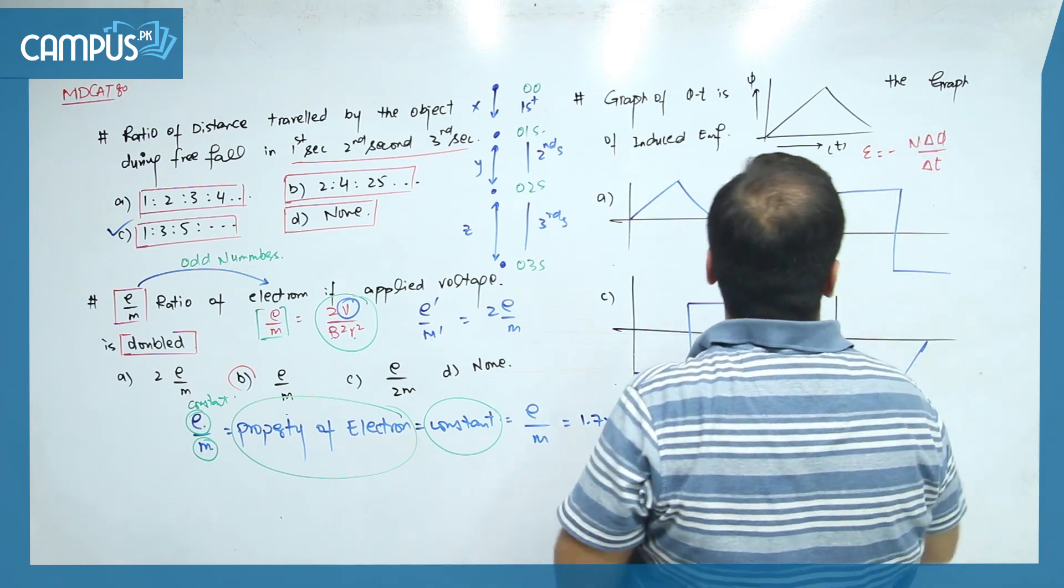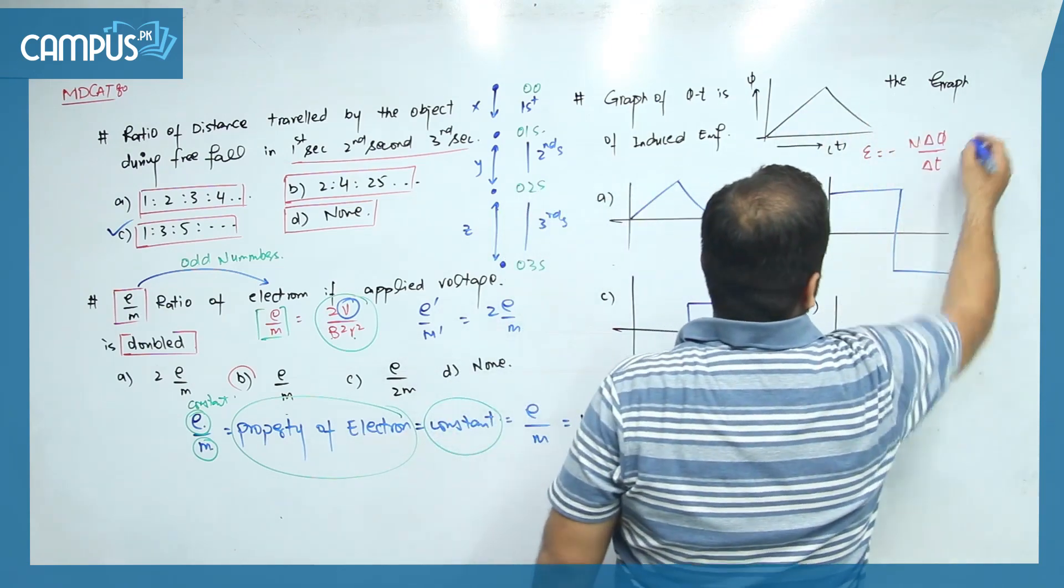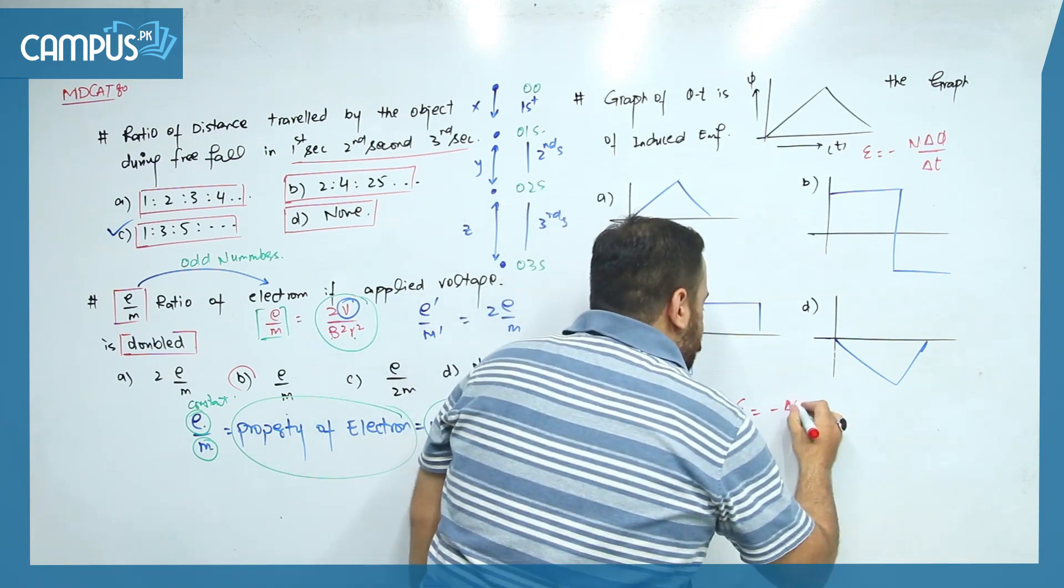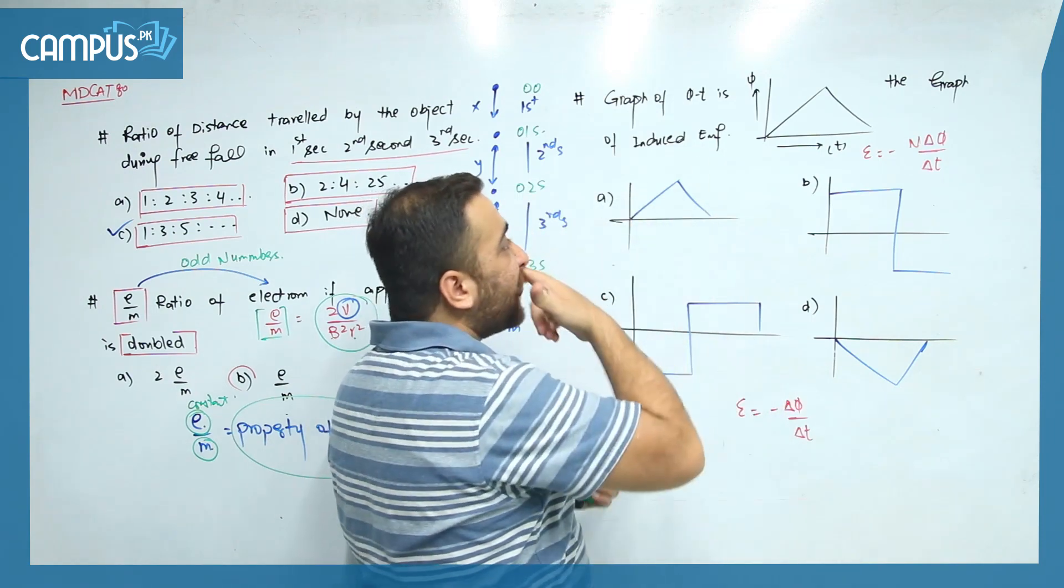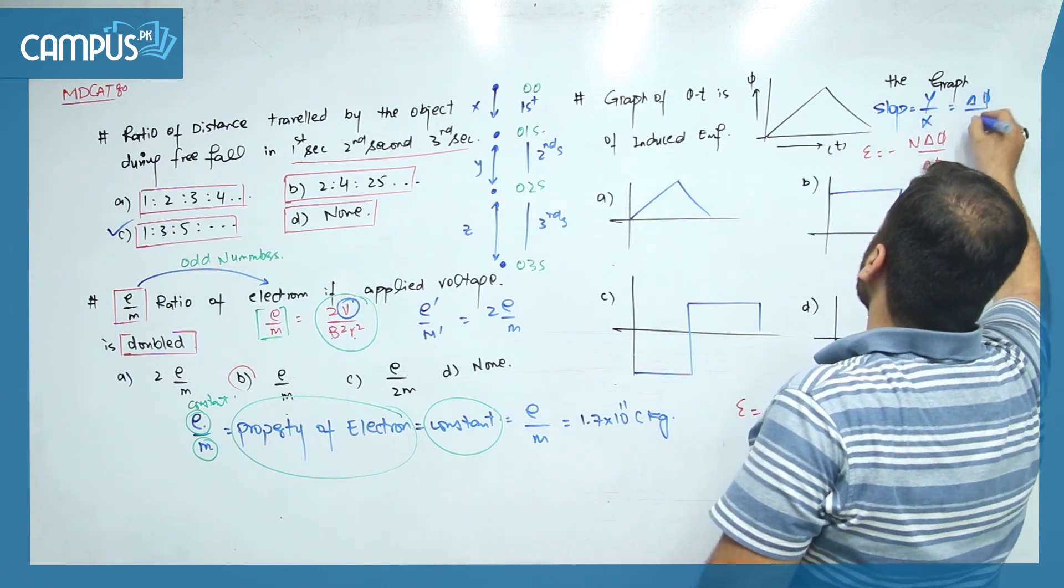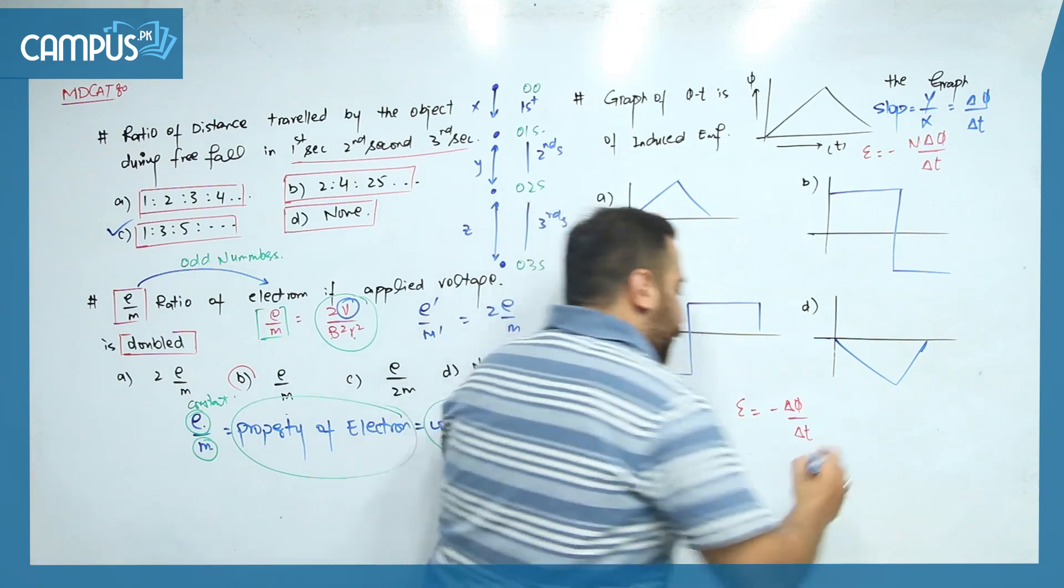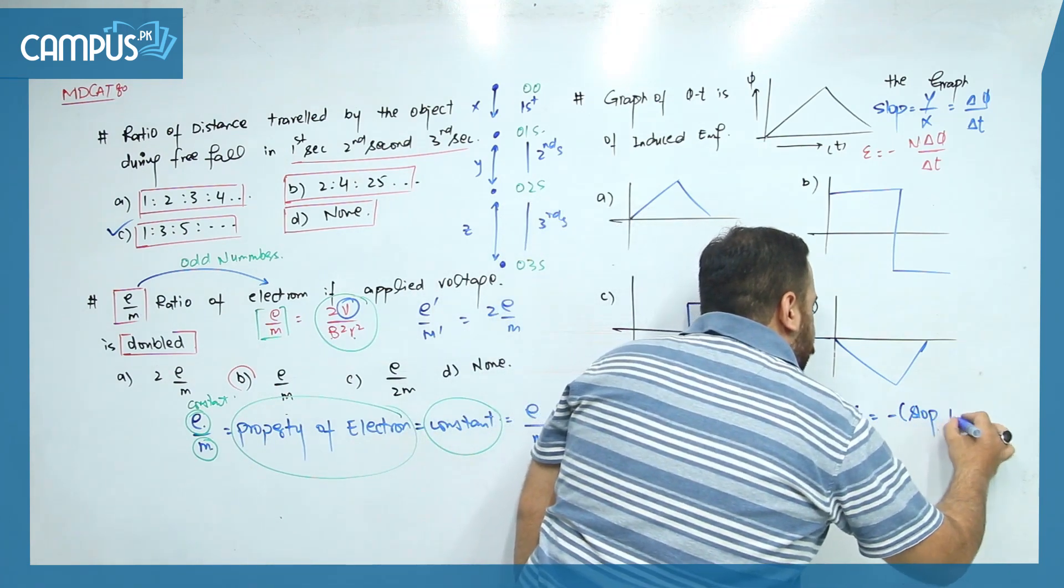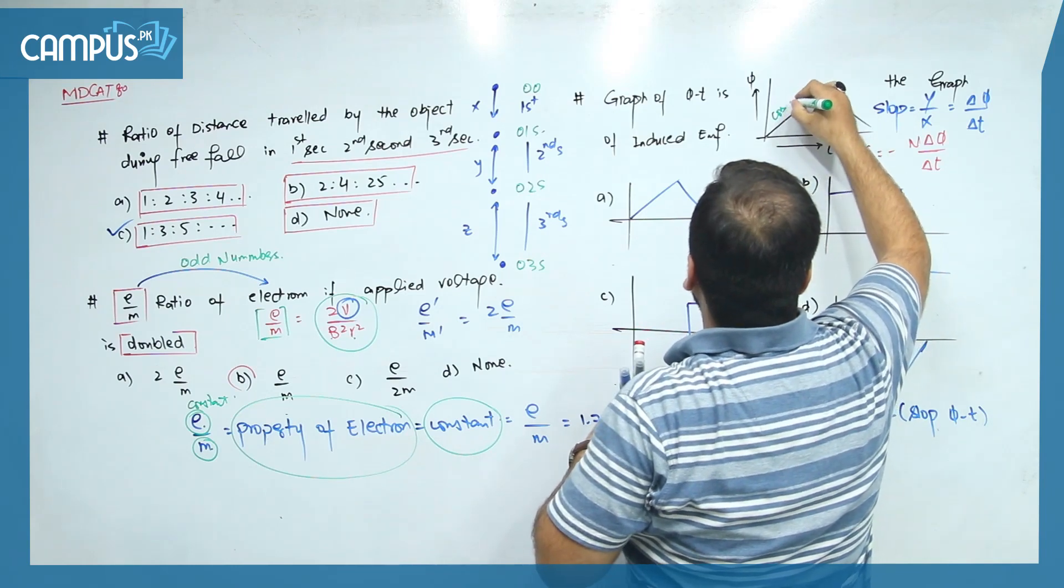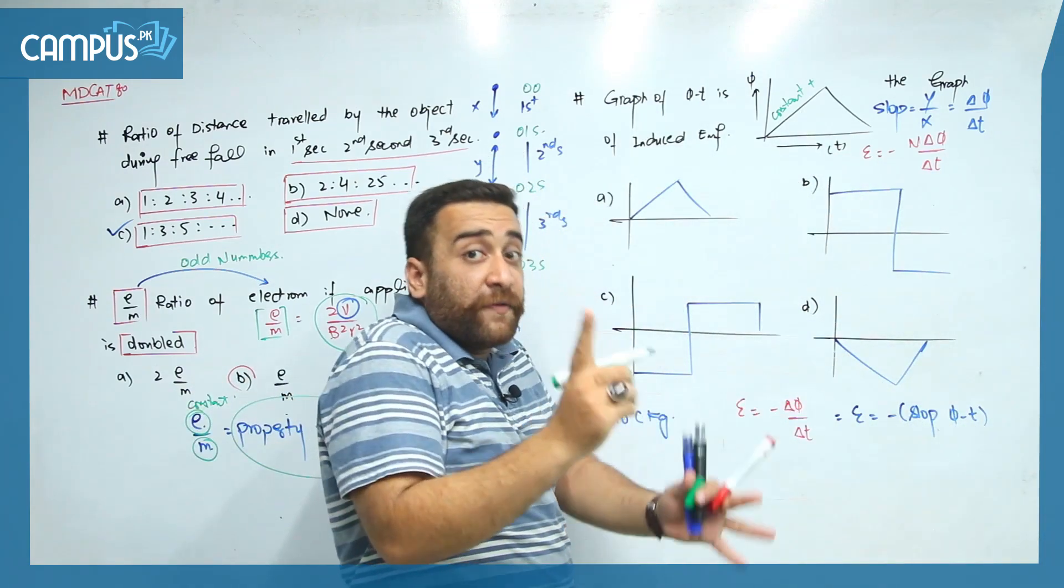Looking at the graph of flux versus time. The formula is: flux - the EMF formula is e = -n(delta flux / delta t). Delta flux over delta t is the slope of this graph. Slope is y over x. So delta flux over delta t is the slope of the graph. EMF is equal to minus the slope of the flux versus time graph. Now look at this graph - the slope is constant and going upward, so it's positive constant. Because it's not changing, EMF should also be constant, and due to this negative sign, the constant value should be negative.